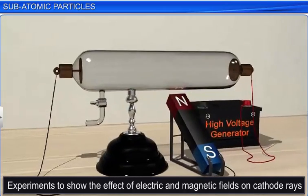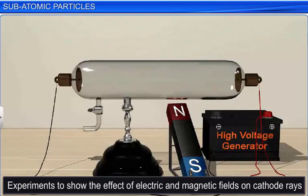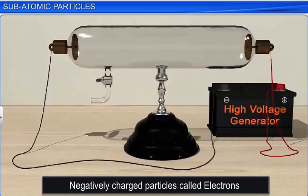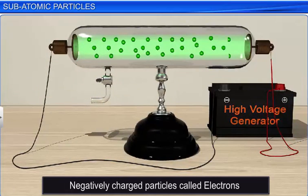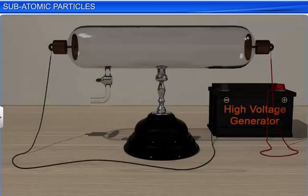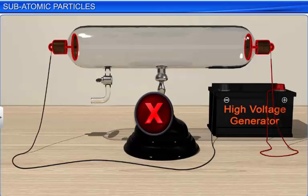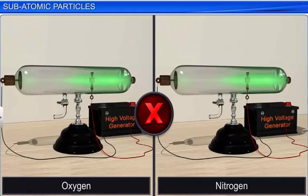He observed the same result on applying a magnetic field. Therefore he concluded that cathode rays consisted of negatively charged particles, which he named electrons. Through his experiments, Thomson also concluded that the properties of cathode rays do not depend upon the material of electrodes or the nature of the gas present in the cathode ray tube. This led him to the conclusion that electrons are the basic constituents of all atoms.